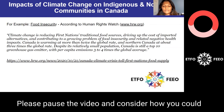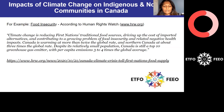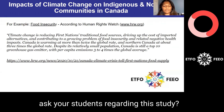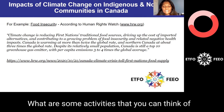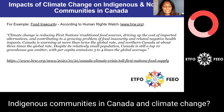The HRW further reported that climate change is reducing First Nations traditional food sources, driving up the cost of imported alternatives, and contributing to a growing problem of food insecurity and related negative health impacts. Canada is warming at more than twice the global rate, and Northern Canada at about three times the global rate. Despite its relatively small population, Canada is still a top 10 greenhouse gas emitter with per capita emissions three to four times the global average. Please pause the video and consider how you could incorporate the two quotes from the HRW, what guiding questions you can ask your students, and what activities you can think of to get students to investigate the connection between Indigenous communities in Canada and climate change.